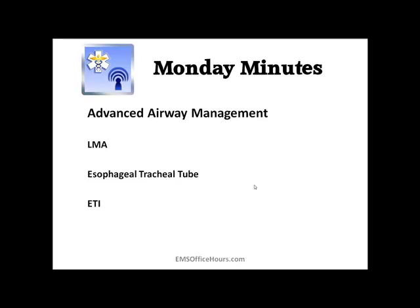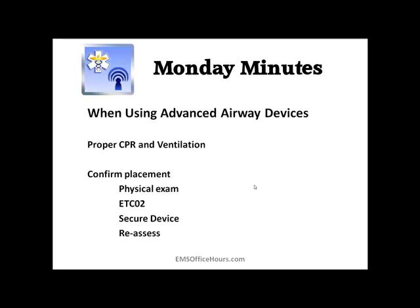When inserting advanced airway devices, make sure you maintain proper CPR and ventilation. Use 30-to-2 compression-to-ventilation ratios. You don't want to over-ventilate the patient — aim for 10 to 12 breaths per minute, which works out to about 5 to 6 seconds between ventilations. Remember, 30-to-2 if you don't have an advanced airway in place.